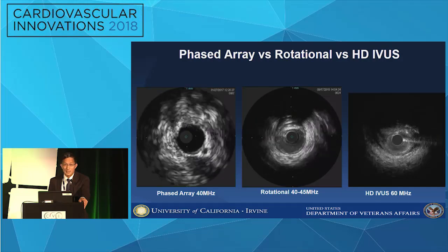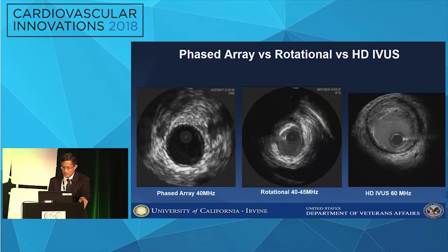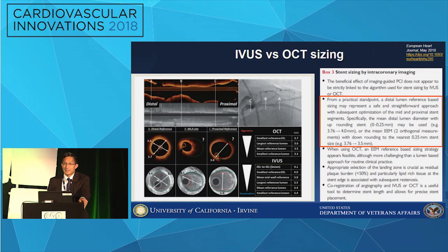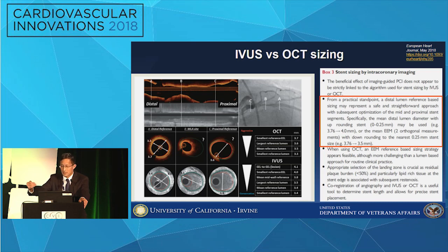Rotational catheters tend to give better image quality. These are both 40-megahertz catheters, yet the phased array catheter looks much worse than the rotational 40-megahertz. The most recent advancement is HD IVUS — 60-megahertz catheters from Abbott and Boston Scientific — which will only make it better and come closer to OCT. For stent sizing, this latest article from the European Heart Journal goes over all the studies and comes to a consensus on how to use IVUS or OCT to determine optimal stent length and sizing. The conclusion was to use the distal reference lumen — you can upsize by 0.25 millimeters from it, or if you're using the EEM, downsize by 0.25.